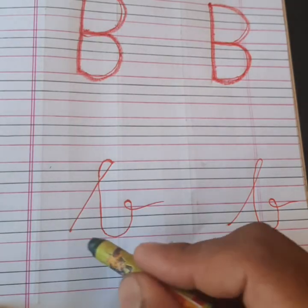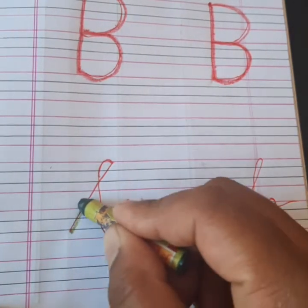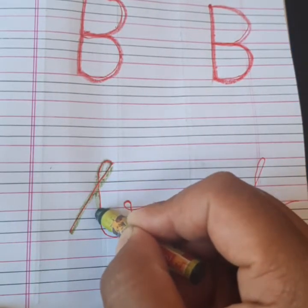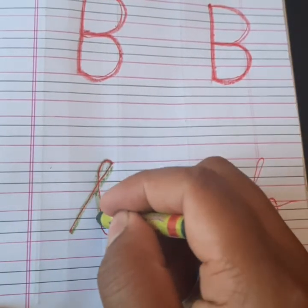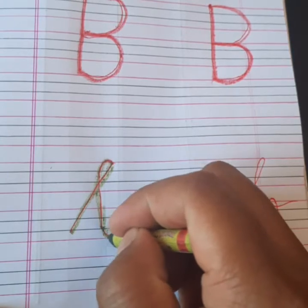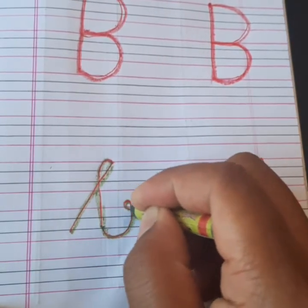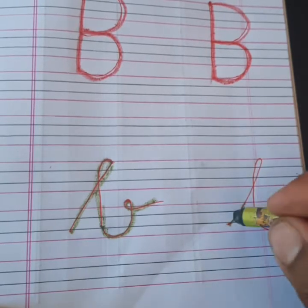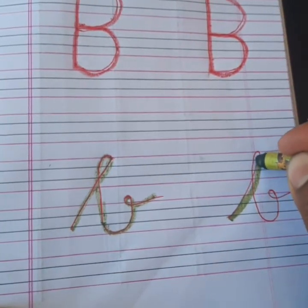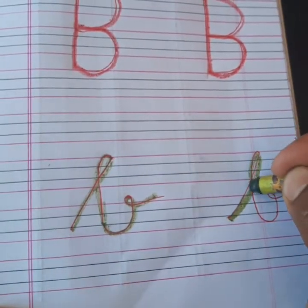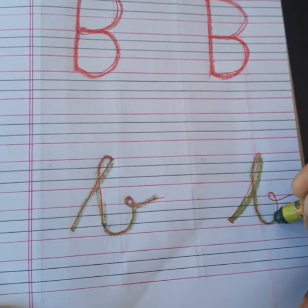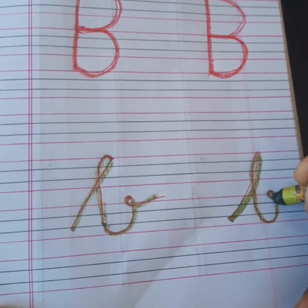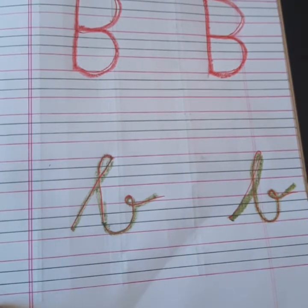See here. One slant line, go up, take a curve, come down, go up, and a tail like this. Here also — slant line, take a small loop, come down, and a tail.